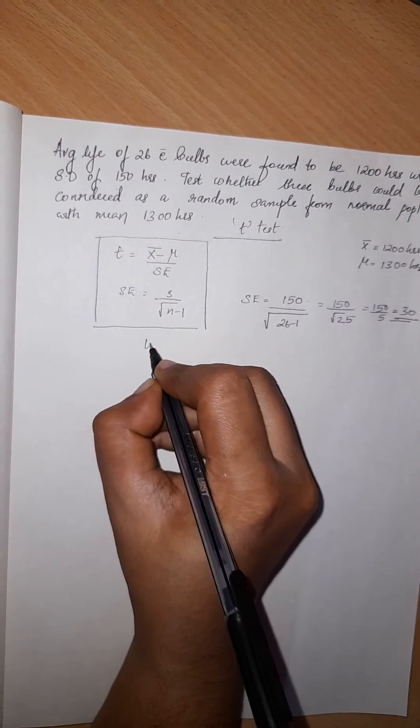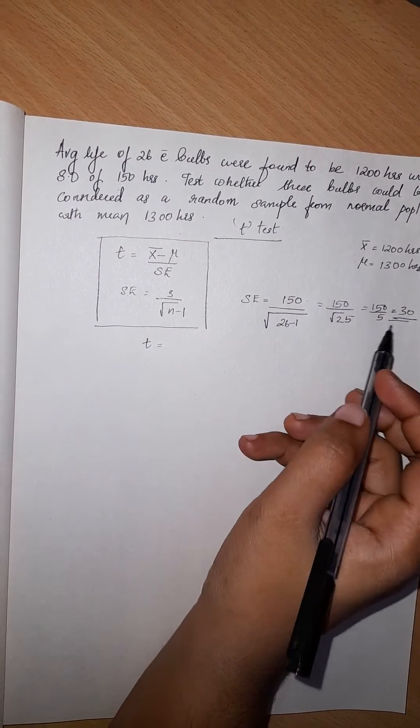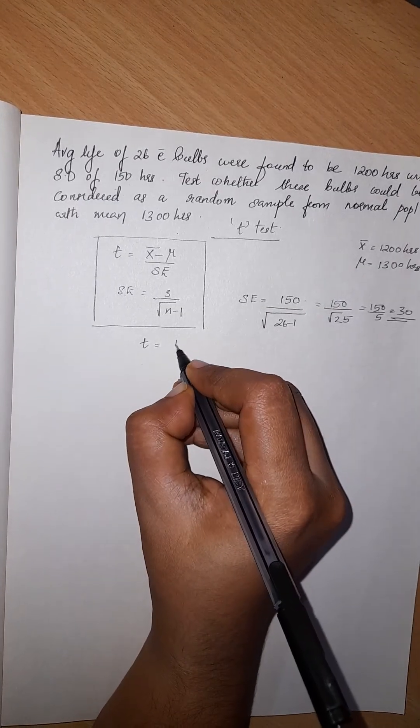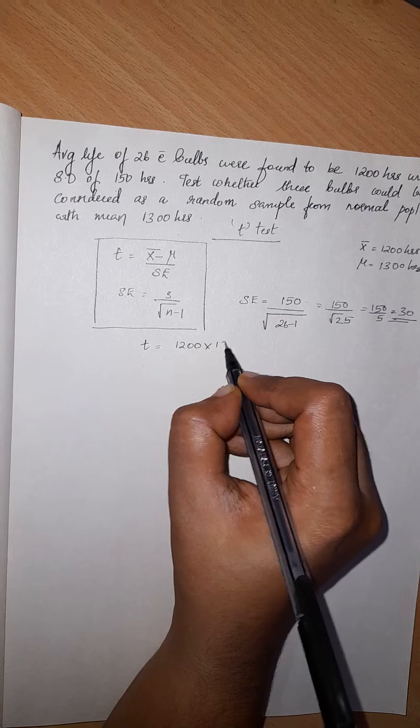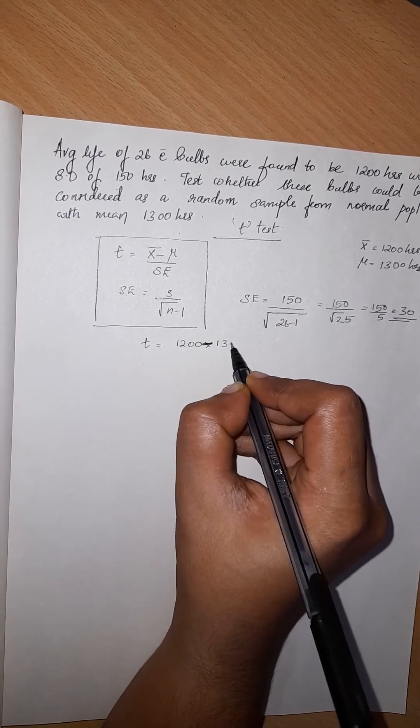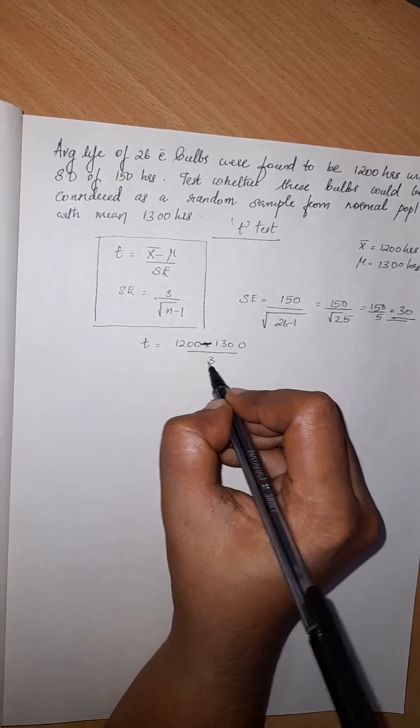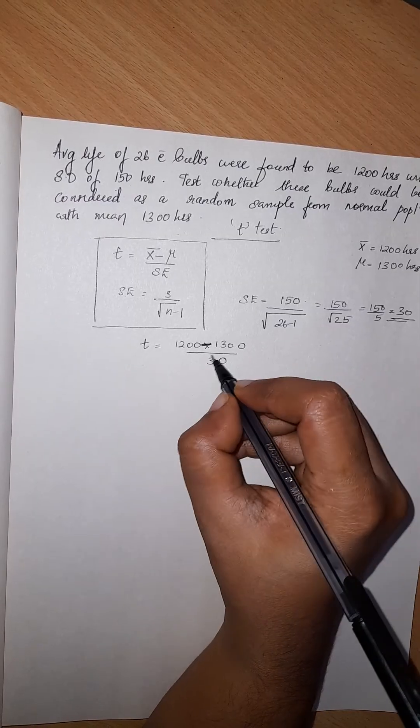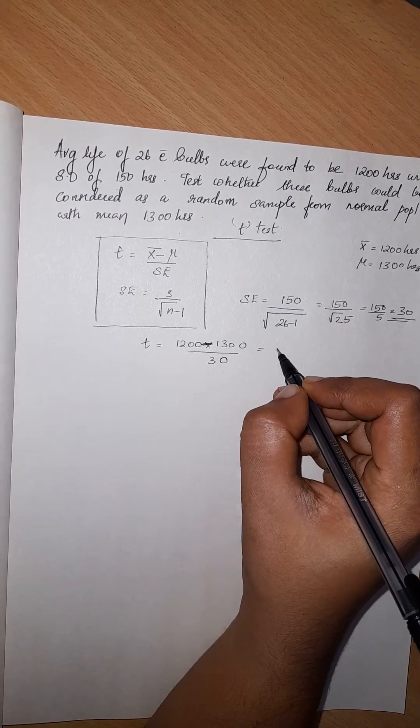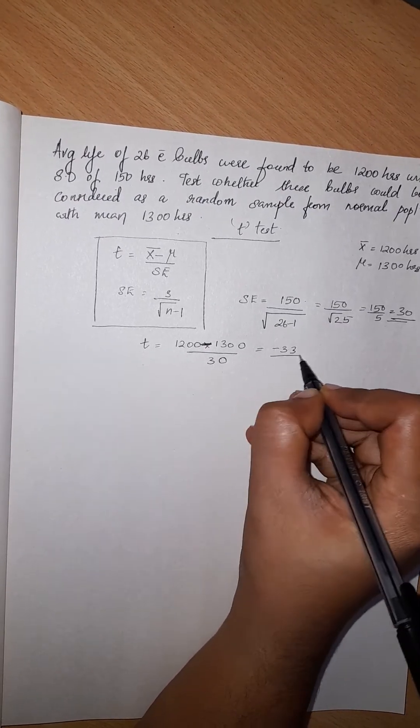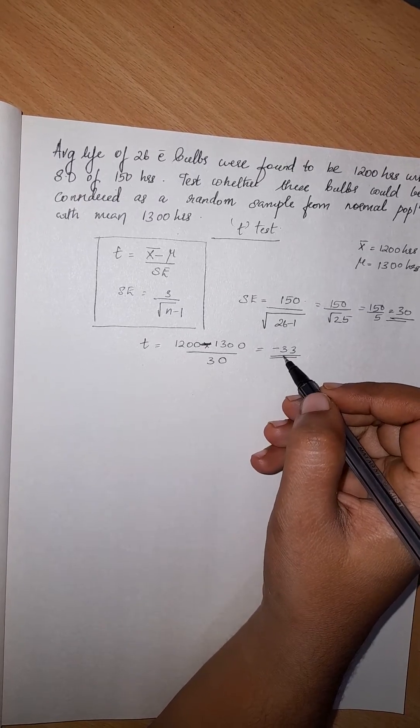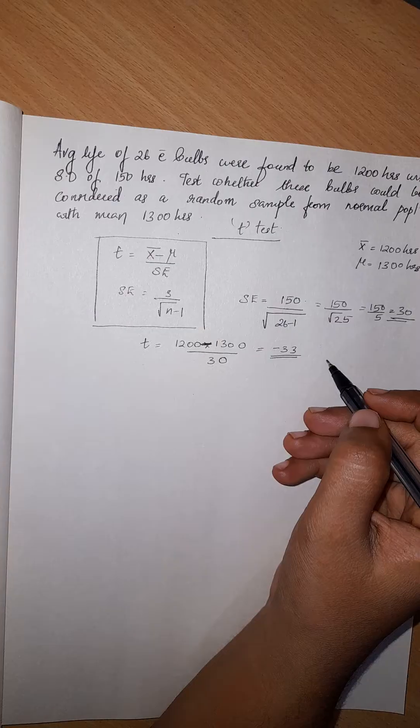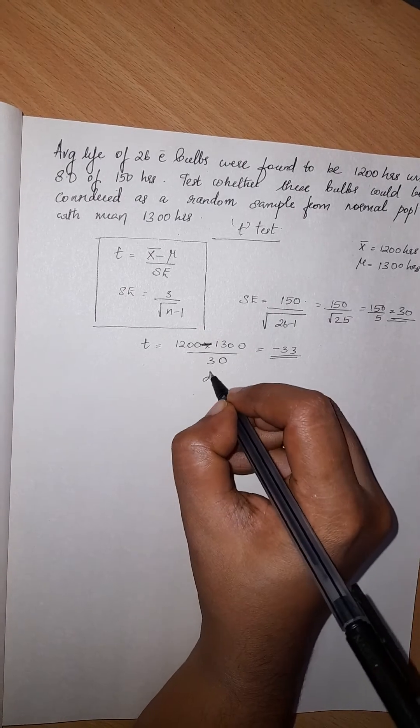So t is equal to 1200 minus 1300 divided by 30. On calculating this, the value is minus 3.3. Minus 100 by 30 equals minus 3.3. Now we get the calculated value of t-test.